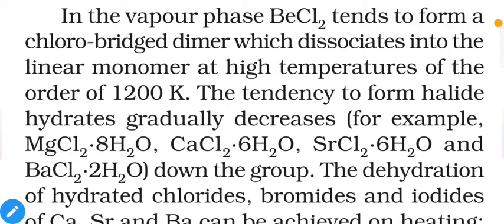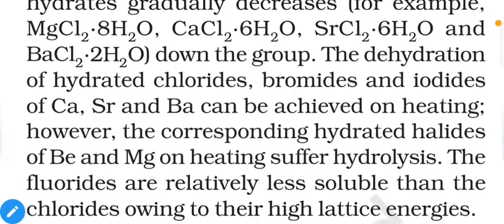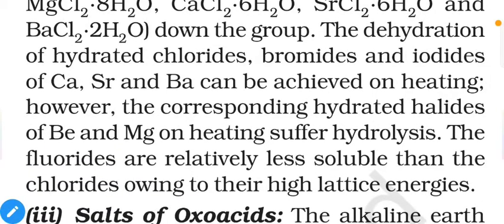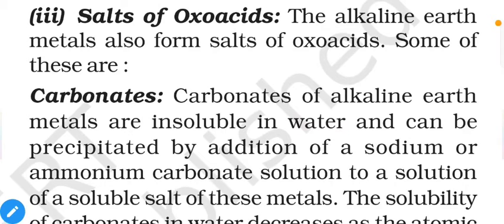The tendency to form halide hydrates gradually decreases: MgCl₂·8H₂O, CaCl₂·6H₂O, SrCl₂·6H₂O, and BaCl₂·2H₂O — as we move from top to bottom, the number of H₂O molecules decreases. Dehydration of hydrate chlorides, bromides, and iodides of Ca, Sr, and Ba can be achieved on heating. However, corresponding hydrate halides of Be and Mg suffer hydrolysis on heating. The fluorides are relatively less soluble than chlorides owing to their high lattice energies.